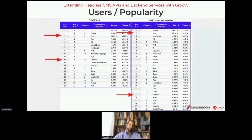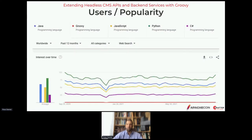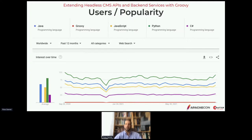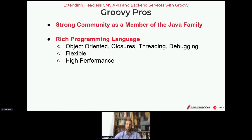Java ranks really well when compared to JavaScript, which is hugely popular in our space. Python is doing quite well too, largely due to systems admins and data science use. Another reason we chose Groovy is that it's a really rich, mature programming platform — object-oriented, supports closures, threading, and inline debugging, and it's performant and flexible. There's so much to like about it.